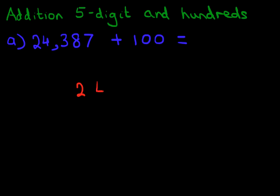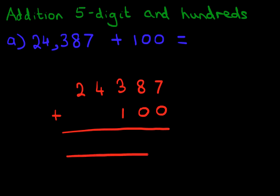We have 24,387 plus 100. And note the one, because one is a 100, we put that below the three. And we've said this before. The key is to make sure that you write it down correctly.